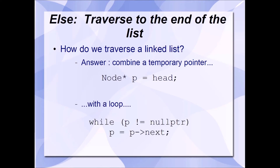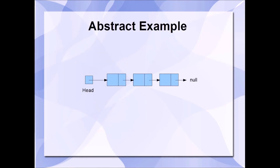Once we have our temporary pointer, we can then use it to perform the traversal. Here's an example in C: while P is not equal to null, set P to P->next. In other words, overwrite the memory address in P with the memory address inside of the next pointer that's stored inside of the node whose address is currently in P. Here's an example in the abstract. Here we have a representation of a linked list. The box at the very beginning of the list is the head pointer — it is not a node in itself, it is just a node pointer that contains the memory address of the first node in the list.